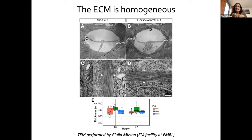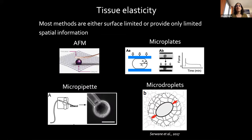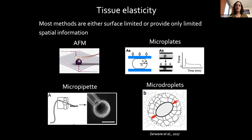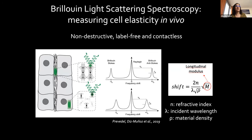The extracellular matrix around the notochord has extremely parallel, heavily cross-linked collagen fibers. We really wanted to measure the mechanical properties of that matrix, but it's not trivial because it's in the center of the fish. Traditional methods like atomic force microscopy, microplates, or micropipettes have issues because the structure isn't at the surface. Micro-droplet methods give only local measurements. So we teamed up with Robert Prevedel to build a Brillouin light scattering microscope, which allows us to measure the viscoelastic properties of the extracellular matrix in a non-destructive, label-free, and contactless way.